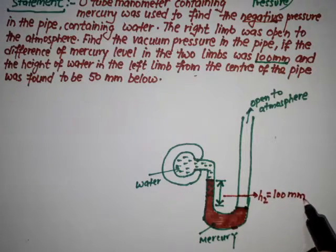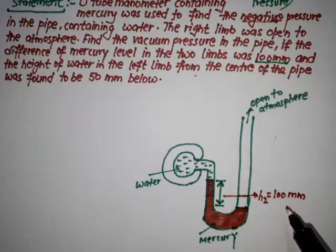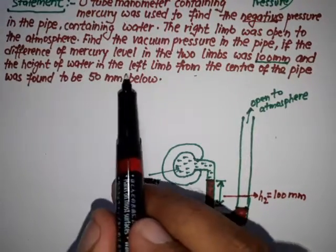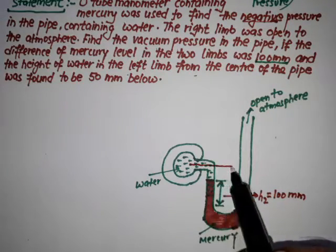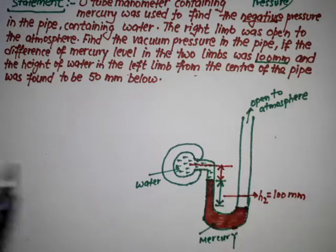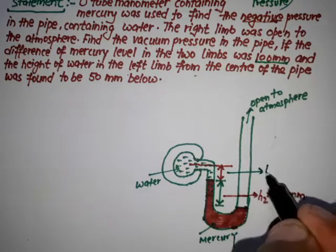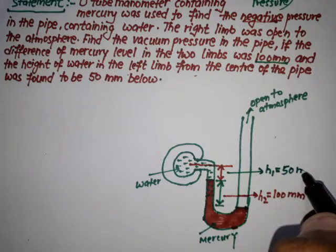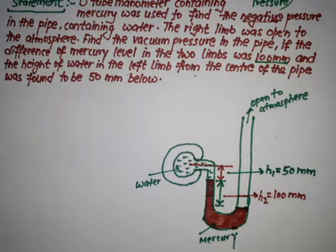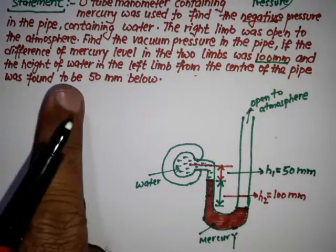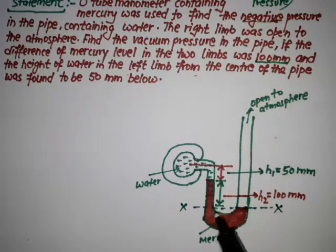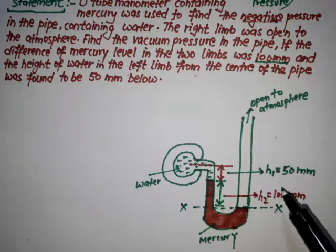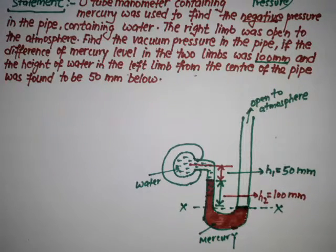h2 equals 100 mm as given. The height of water in the left limb from the center of the pipe is 50 mm below — this is the center of the pipe — so h1 equals 50 mm. This is the example of negative pressure because there is no mercury above the datum line. This is the datum line XX, and above the datum line in the right limb there is zero head.